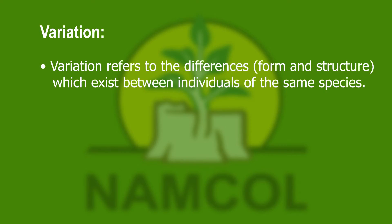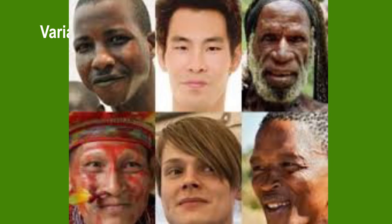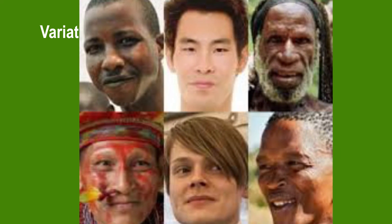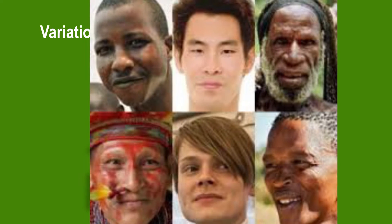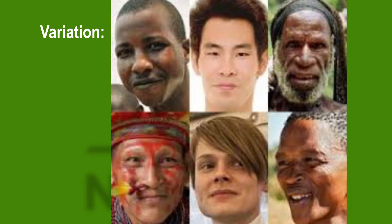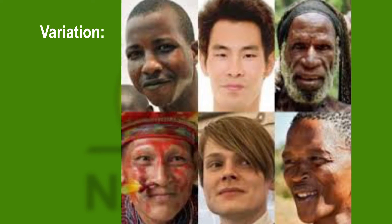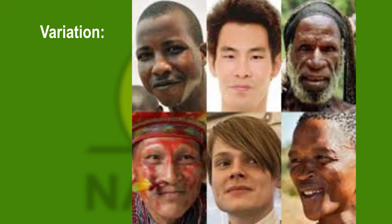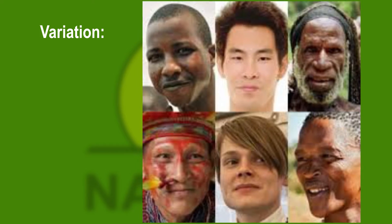After the example that I've given, what do you think variation is all about in biology? Variation refers to the differences, form, and structure which exist between individuals of the same species. The graphic shows the differences between individuals belonging to the same genus and the same species — Homo sapiens, which means human beings. Although these human beings belong to the same species, you can clearly see there are differences between them.